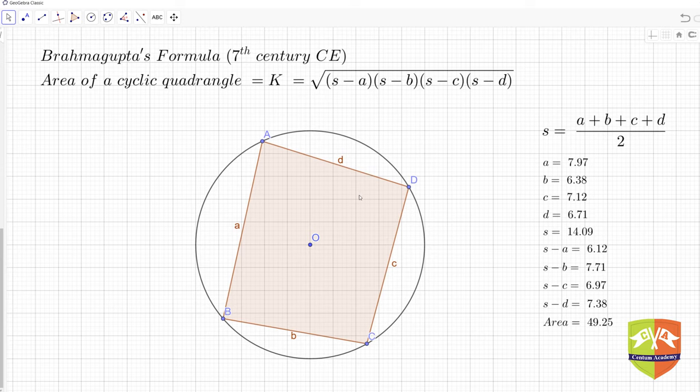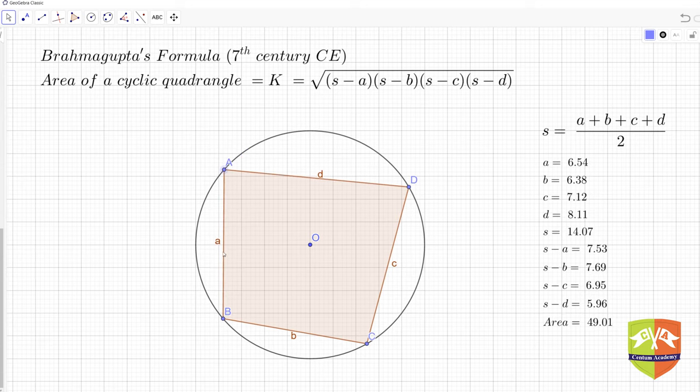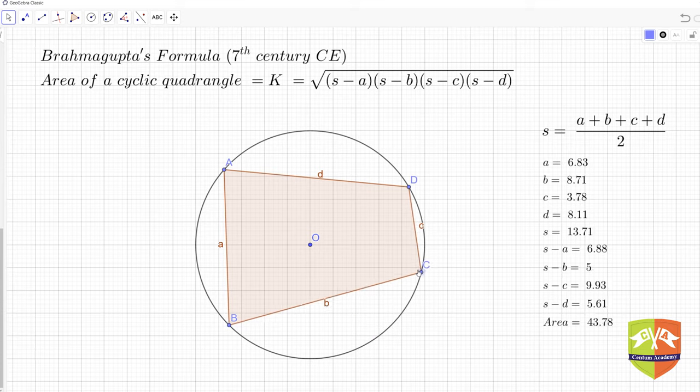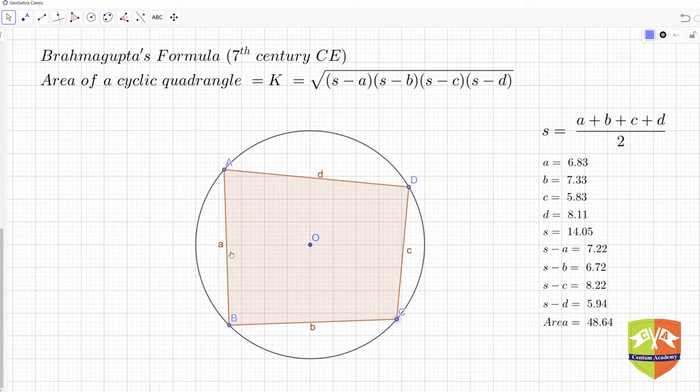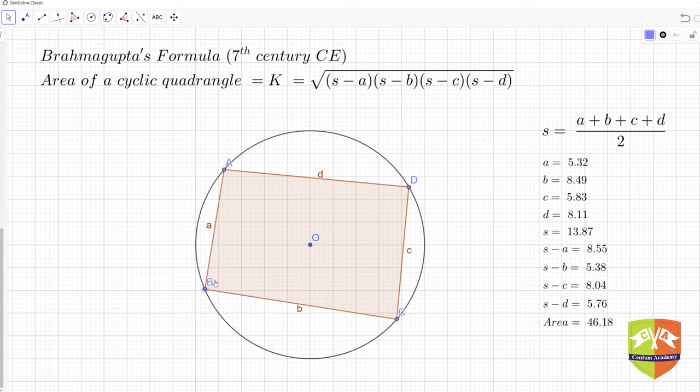I have drawn a circle with radius 5, center O, and A, B, C, D are four points on the circle forming a cyclic quadrilateral. I have already calculated the area you can see on the right side panel. S is the semi-perimeter, so a plus b plus c plus d divided by 2. The values of a, b, c, and d are shown here.